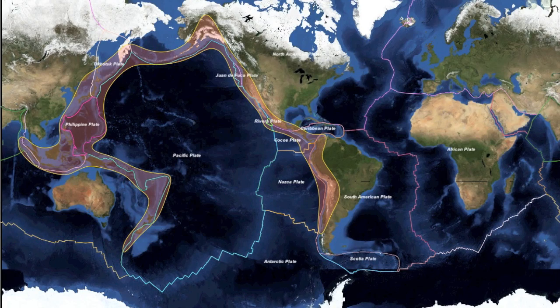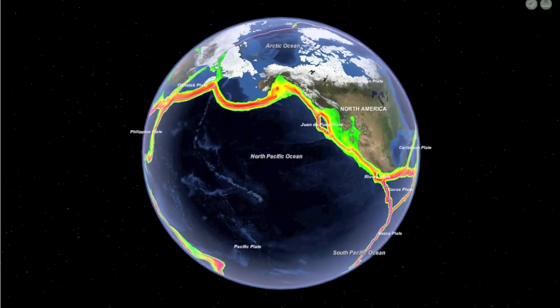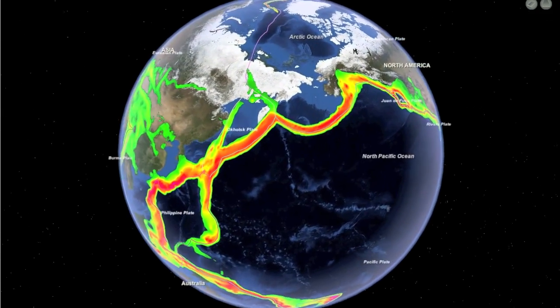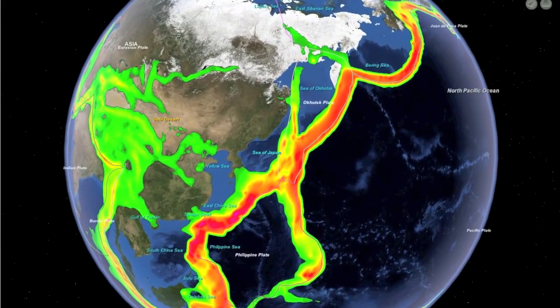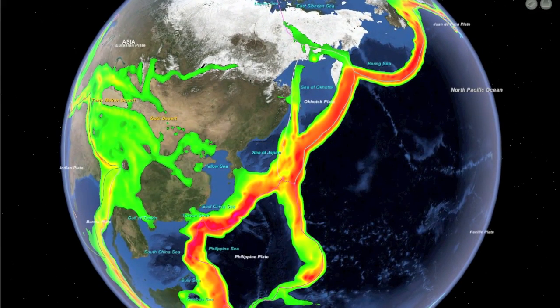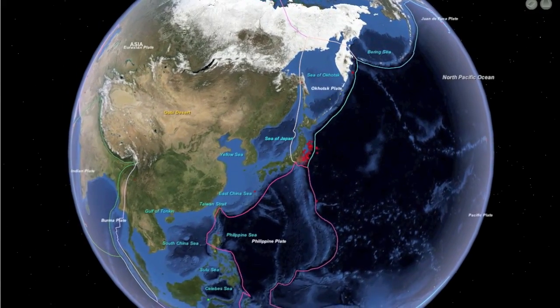The Ring of Fire circles the Pacific Ocean where plate boundaries meet. These plates fit together rather like a jigsaw puzzle but are in constant motion relative to one another. The strain generated by this motion can build for centuries and may finally release in the form of an earthquake.